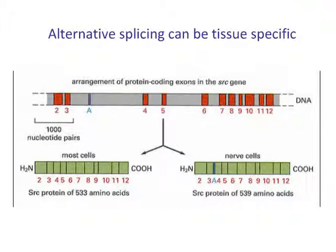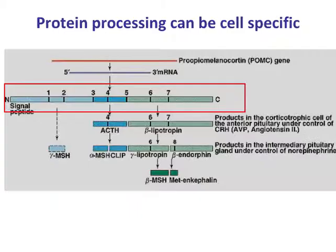Post-transcriptional processing of messenger RNA can also be tissue-specific. For example, the primary transcript of the Src tyrosine kinase is differentially spliced in nerve cells compared to most other cells, resulting in a slightly longer Src tyrosine kinase in nerves. Likewise, post-translational processing of proteins can also be cell-specific. Cells in the pituitary all express the POMC gene and produce a single peptide, which is differentially processed by proteases in a cell-specific manner to produce a variety of different peptide mediators. Thus, the anterior and posterior pituitary can produce completely different end products from the same gene and primary translation product.